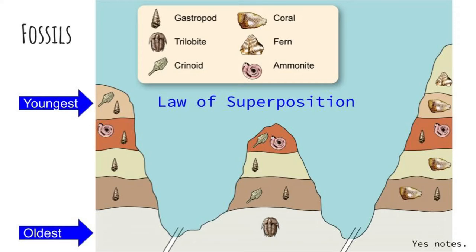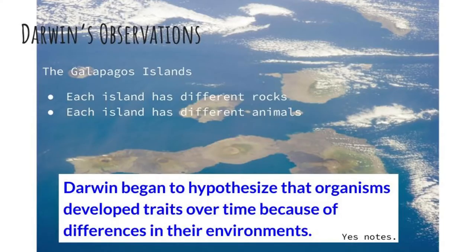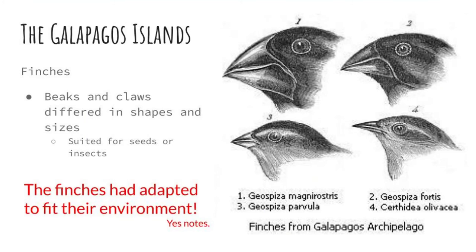Successive layers are deposited one on top of another, so that the lowest layer, or stratum, is the oldest. When Darwin explored the Galapagos Islands, he made some very important discoveries. He found that each island had different rocks and different animals. He began to hypothesize how those organisms had developed their traits and began to think about the origin of species — where did they come from? Had they become so unique and diverse? One of the major observations he made was the Galapagos finches.